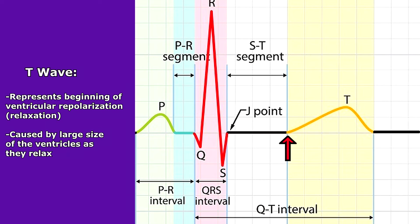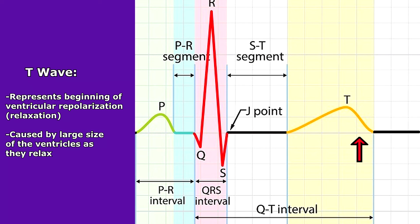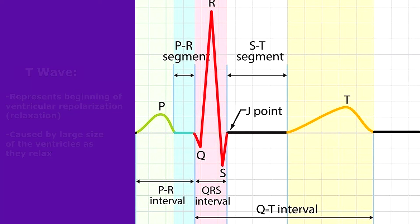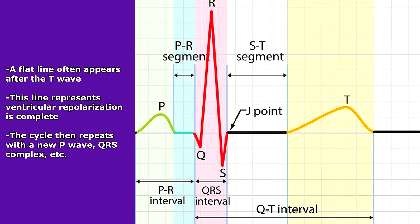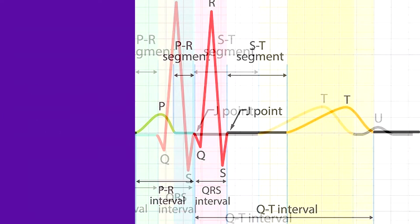The T wave represents the beginning of ventricular repolarization, so relaxation. The ventricles are so big that whenever they relax, it creates this T wave. After the T wave, you usually have a flat line representing that ventricular repolarization is complete — it's isoelectric. Then the cycle starts immediately again, where you get a new P wave, QRS complex, and T wave, and it just keeps going.